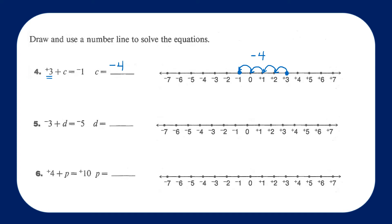Question number 5: we are going to start at negative 3 and we want to land on negative 5. We're going to have to move and decrease our number by 1, 2 spaces, so that's negative 2 — we're adding a negative 2 to our number. Negative 3 plus negative 2 will give us negative 5.